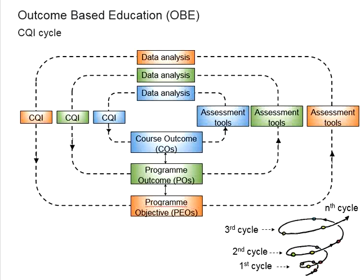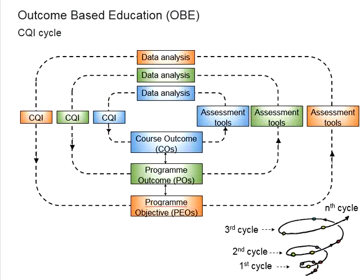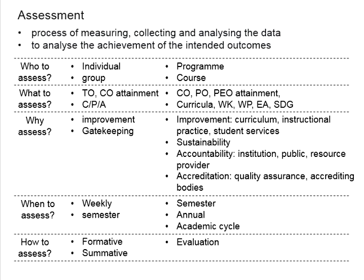We have been talking about the assessment in outcome-based education, as it is an essential part of it. There will be assessment at different levels: at the course outcome level, program outcome level, and program objectives. The purpose of the assessment is to know the status and the performance of the program, to identify the strength and the weakness, so that we can propose improvements at various levels in order to increase the quality of the program as a whole. Now let us discuss in detail regarding the assessment.